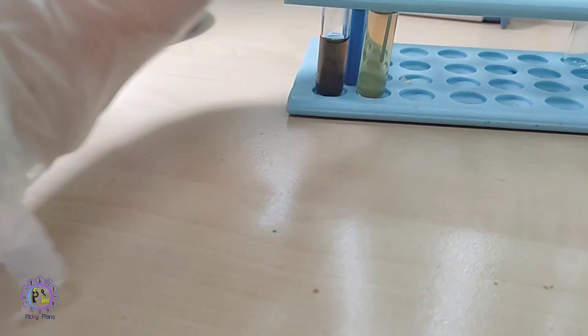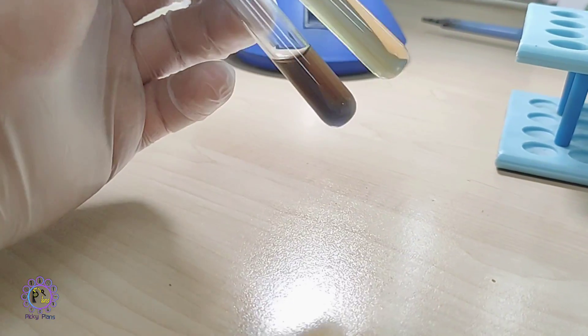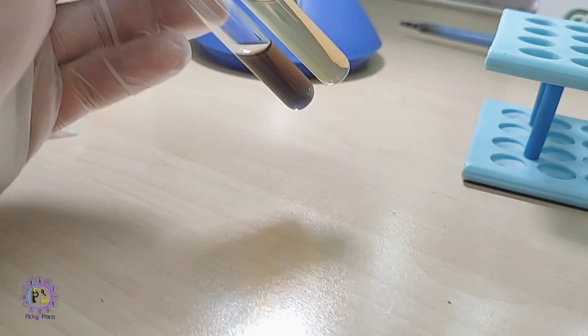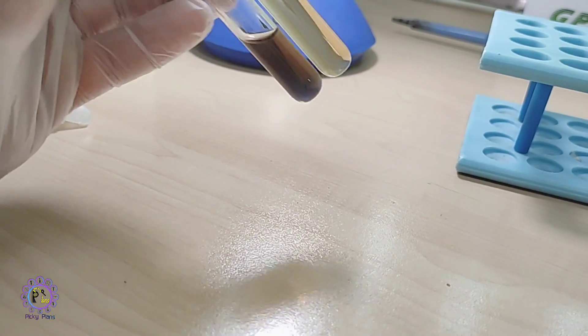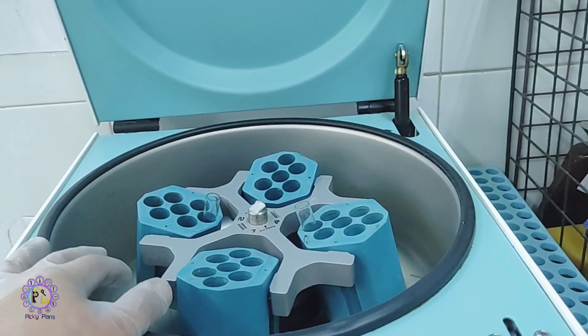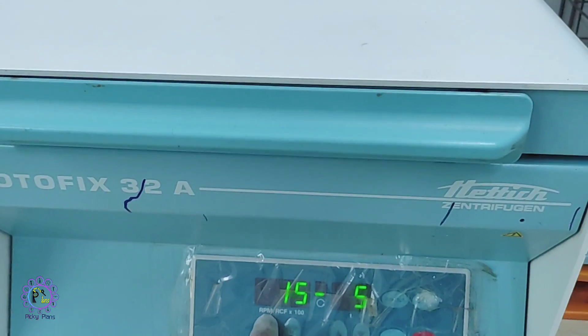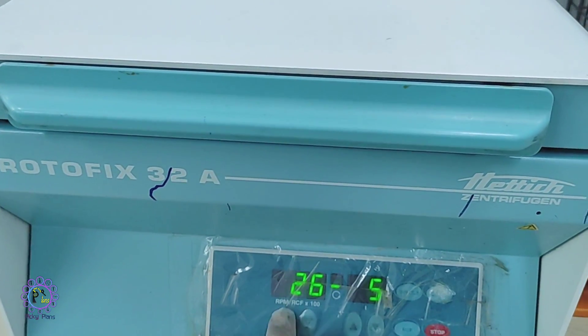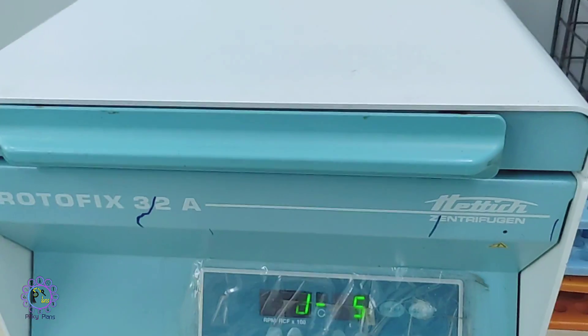To prove that we have two different things here, I want to centrifuge them to see what will happen after centrifuging. Will we have precipitate at the bottom or not? I place them in the centrifuge machine and need to balance them. I will run it at 3,000 RPM for five minutes. I'll get back and show you the result.